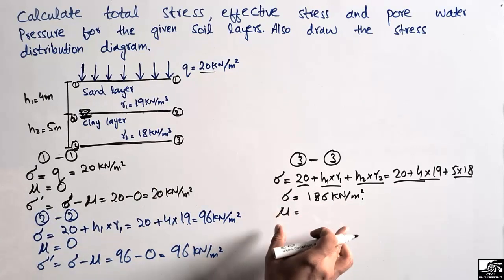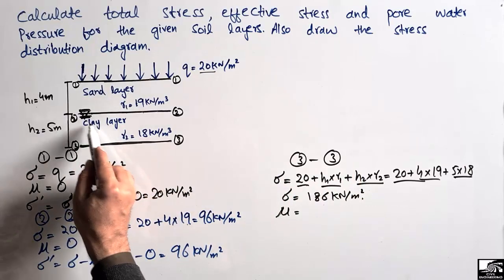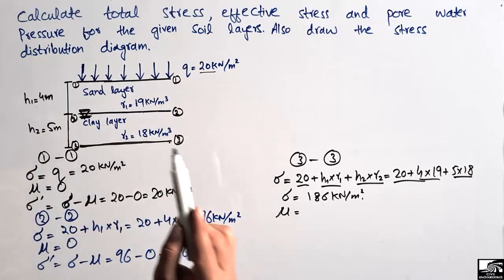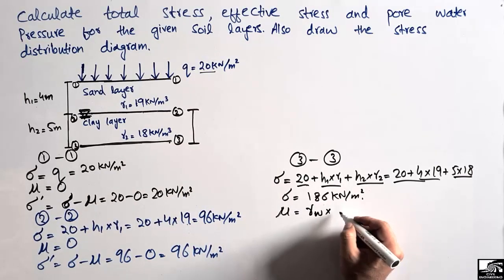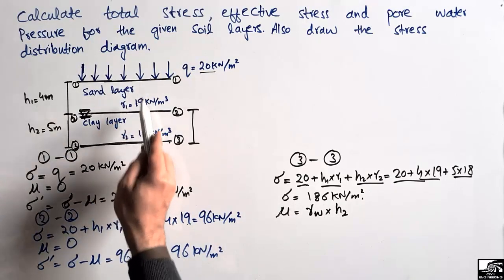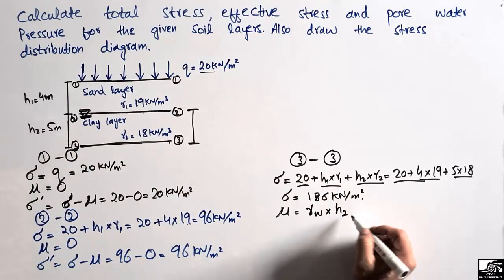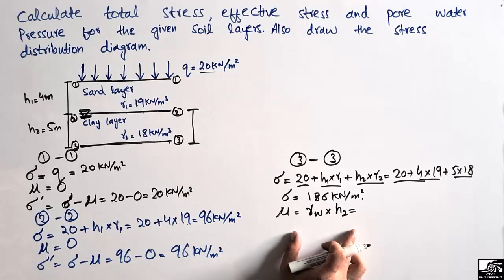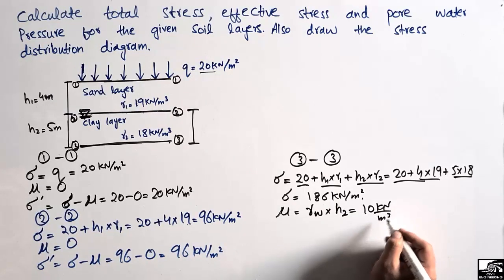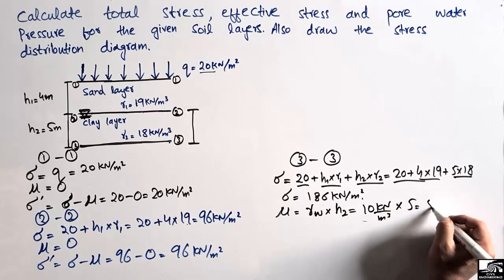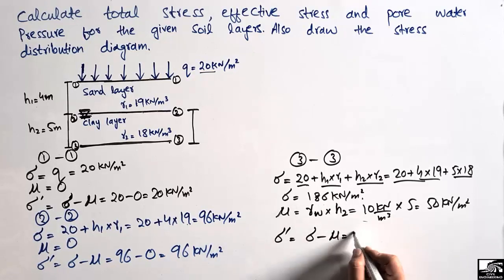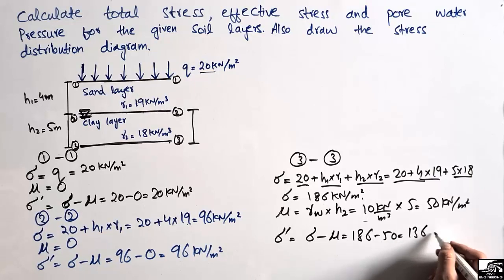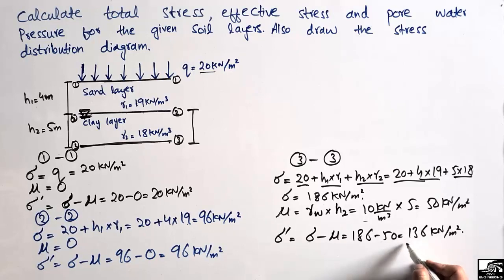The pore water pressure is included at section 3-3 because the water table is at the top of the clay layer. The pore water pressure equals γw × H2 — we don't include H1 because there is no water above section 2-2. With γw = 10 kN per cubic meter and H2 = 5 meters, pore water pressure = 10 × 5 = 50 kN per square meter. The effective stress = 186 minus 50 = 136 kN per square meter at section 3-3.